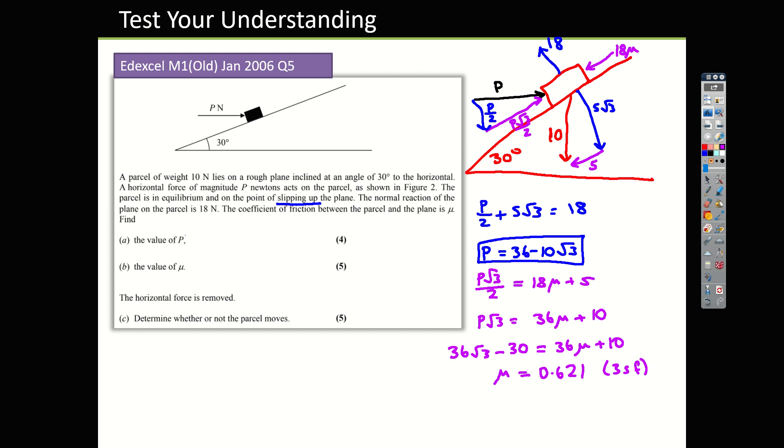So P is done here. We've got that for part A. μ is here. If you want to, you can work out the decimal value for that, but we're about done. Now the horizontal force is removed. That's going to be annoying because I need to now draw another picture where there's no horizontal force and just think about all the forces that are left over. Remembering as well that μ does not change. Drawing excellent horizontal lines today. So here's our box.